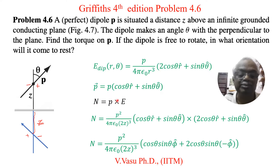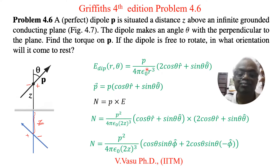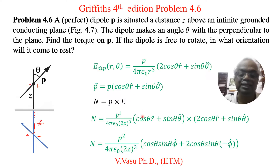Now the torque N is equal to P cross E. Here P is the dipole moment in the direction (cos theta r-hat plus sin theta theta-hat). For E, there is already one factor of P, so this will become P squared over 4 pi epsilon naught times (2Z)^3, because the distance between the dipole and its image is 2Z. So I am using (2Z)^3, and the field has the form (2 cos theta r-hat plus sin theta theta-hat).